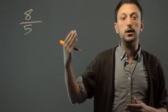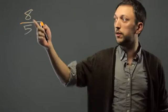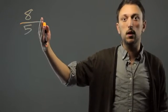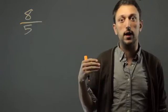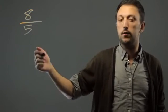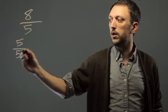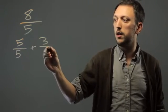To simplify it, we want to turn it into a mixed number or mixed fraction. The way we do that is we create an integer to the left, accounting for most of the fraction. In this case, 8 fifths, let's think about it as 5 fifths plus 3 fifths.